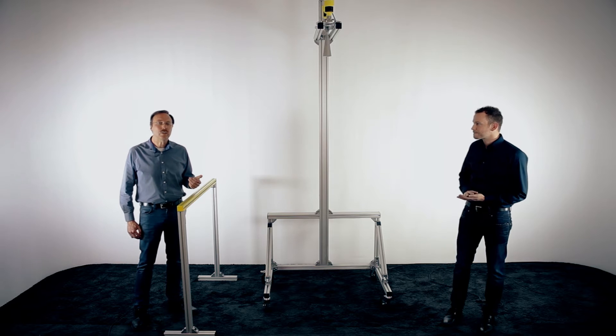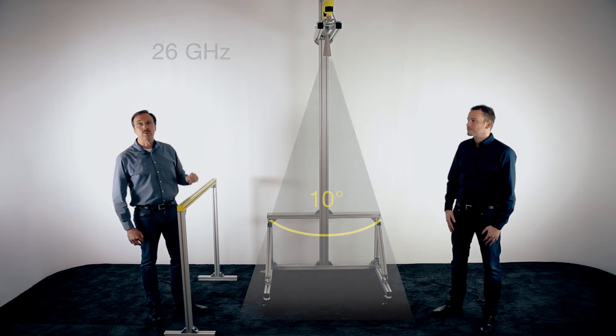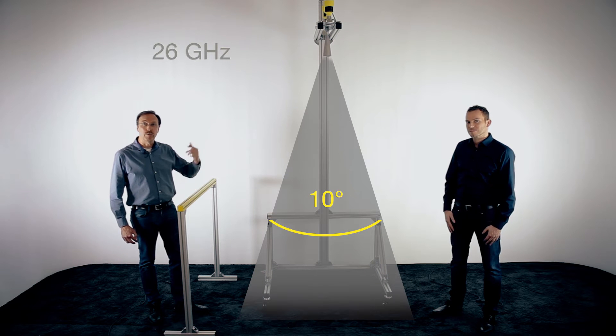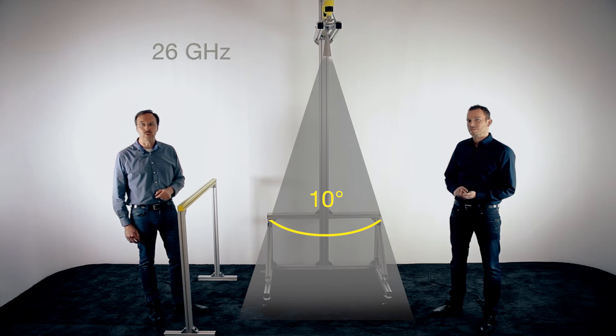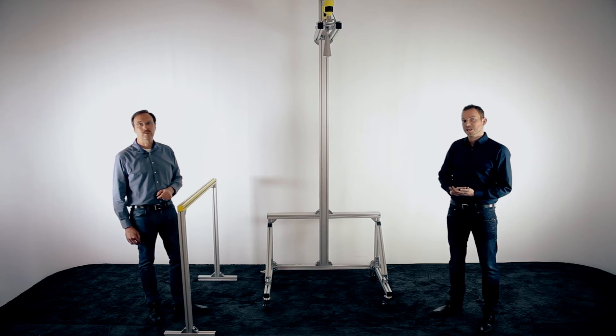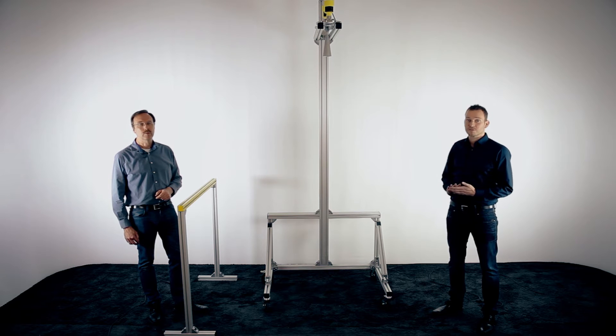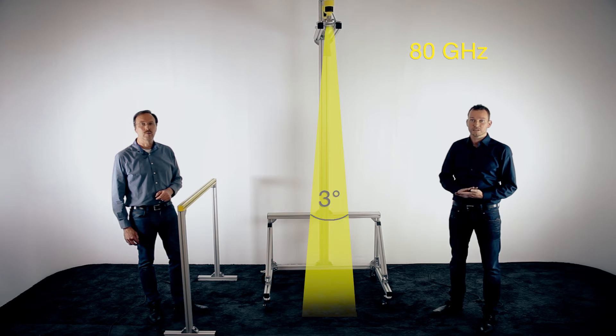To show you some details, we have installed two radar sensors on top here. One is working with 26 GHz, and we use a horn antenna with a focusing of approximately 10 degrees. Directly in the front, we have installed a Vega Pulse 69, our radar transmitter for bulk solids with 80 GHz, and we have a beam angle of only 3 degrees.